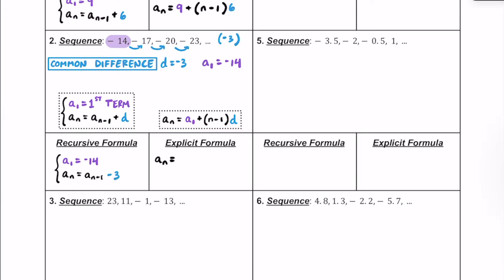Moving on to our explicit formula, this is to help us find any number in the sequence. We're going to say a sub n is going to be based on what a sub 1 is, plus n minus 1 multiplied by the common difference. So in this case, it's going to be multiplied by negative 3.